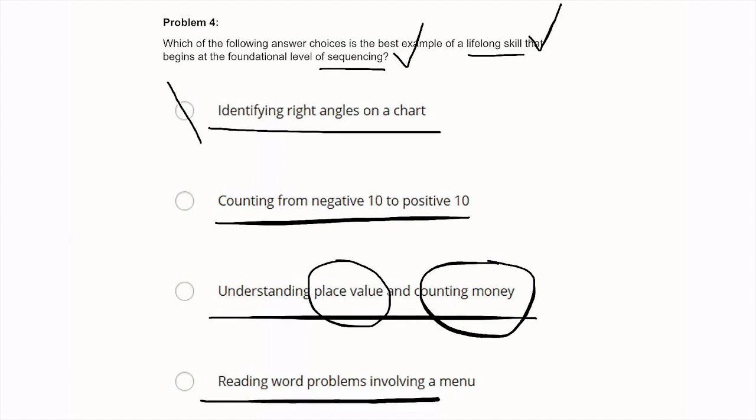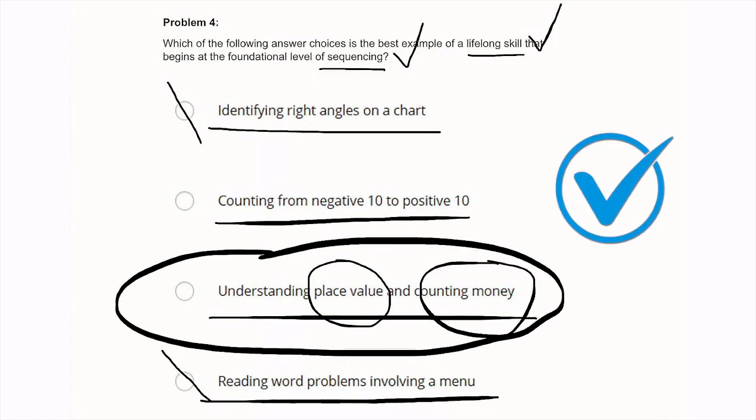Let's see. And the last one, reading word problems involving a menu. I'm sure you might go to a restaurant often and you need to be able to read a menu and it should be something involved in problems for students just for that real life practice. But that's not something that has to do with sequencing or the foundation of sequencing. So that would not be the best example here. So between the second and third option, the third option of understanding place value and counting money meets both requirements best because the question asked for just the best option. So we are going to go with that one.